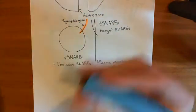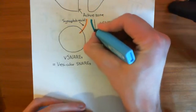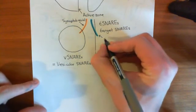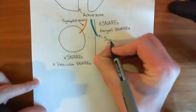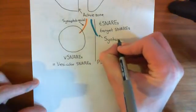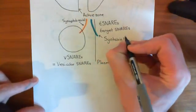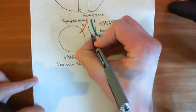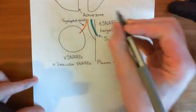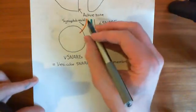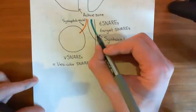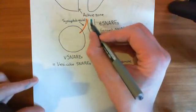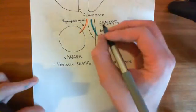One of them is syntaxin-1 — shown here in blue. Syntaxin-1 has a very similar structure to synaptobrevin: it has a membrane anchoring portion and then an alpha helix which is going to interact and form the core SNARE complex.